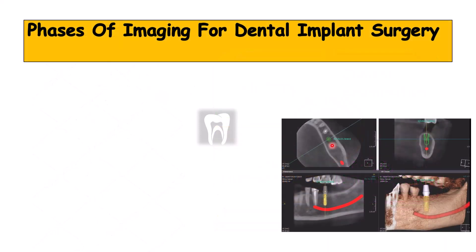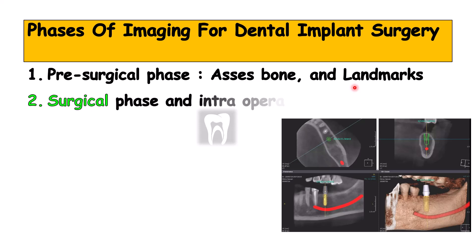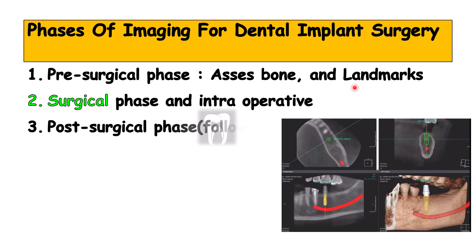We have three phases of imaging for dental implants. The first is the pre-surgical phase, when we decide which radiograph is needed at the dental site for assessing bone quality, quantity, and anatomical structures. The next phase is the surgical phase, during the surgery. And the third phase is after the surgery, or the follow-up stages.